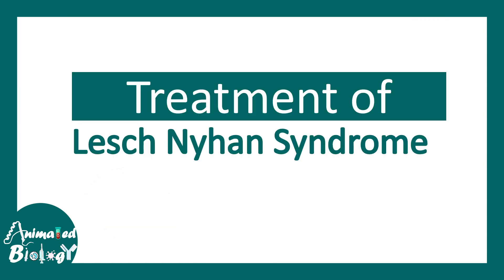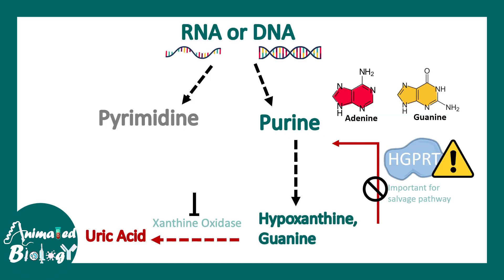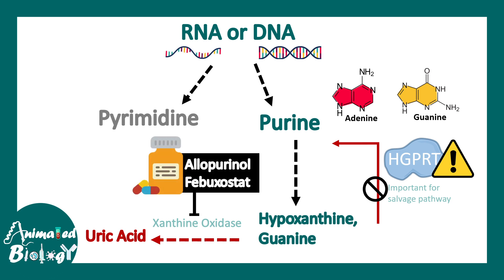Now let's come to the treatment of Lesch-Nyhan syndrome. We cannot correct the underlying genetic abnormality, but we can treat the condition. The main problem is that due to faulty HGPRT, hypoxanthine and guanine are not being converted into purines — they are instead converted into uric acid. Purines also get formed from de novo synthesis, so there is no deficiency of purines. We need to address the increasing uric acid in the blood. Hypoxanthine and guanine are converted into uric acid by the enzyme xanthine oxidase. We can block this xanthine oxidase enzyme to reduce uric acid production, and drugs such as allopurinol and febuxostat do exactly that — the same drugs used in treating gout. Similarly, in Lesch-Nyhan syndrome we can use these drugs to decrease uric acid production and control all manifestations including gout, psychiatric manifestations, reddish discoloration of urine, and tense muscles.